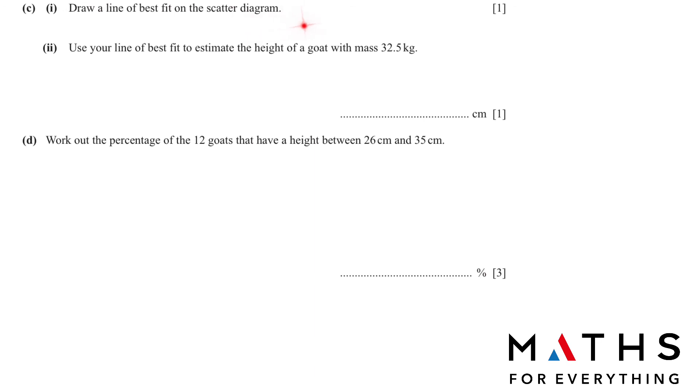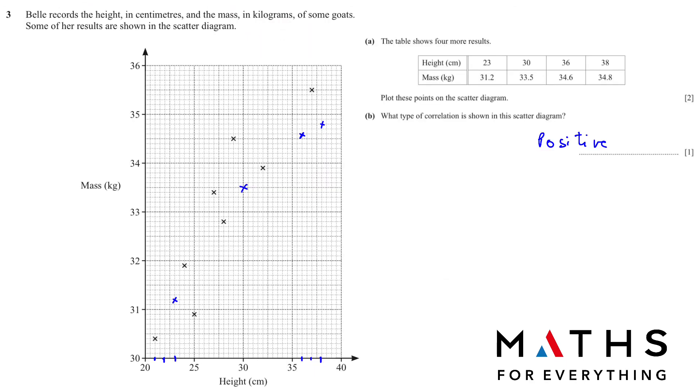C1, draw a line of best fit on the scatter diagram. So we need to draw a line here. There is no hard and fast rule. It's a general line. Try to make equal amount of points on both the sides. And that will give us a line like this.